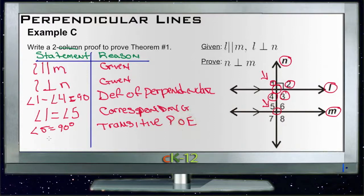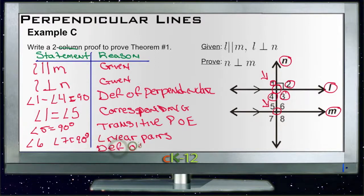And then finally, if 5 is 90 degrees, then 6 and 7 are both 90 degrees because 5, 6 and 5, 7 are linear pairs. So angle 6 and angle 7 are 90 degrees because they're linear pairs. And if 5, 6, and 7 are 90 degrees, then we have our definition again of perpendicular lines. And we're done. Definition of perpendiculars, showing that n is perpendicular to m.